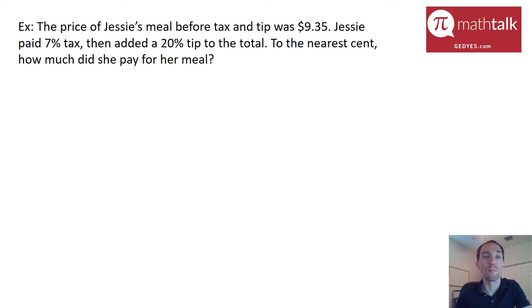This is an important word problem because there's several pieces of information that we could use to figure out how to solve for the final price. They tell us the original price of the meal which is $9.35 and then it says she paid a 7% tax and then added a 20% tip. That word 'then' is actually really key because it tells us what number we need to calculate for the 20% tip.